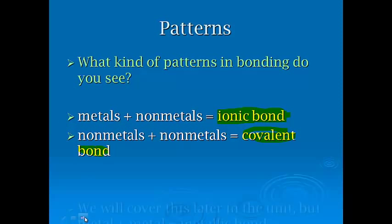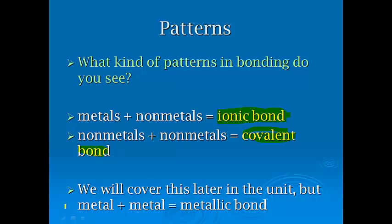And last but not least, we'll cover this later in the unit, but the other combination, metal and metal, is going to be a metallic bond. This is going to be really important, because we're going to do naming, and then we're going to talk about the three types of bonds in detail, and then we'll look at shapes and geometry.